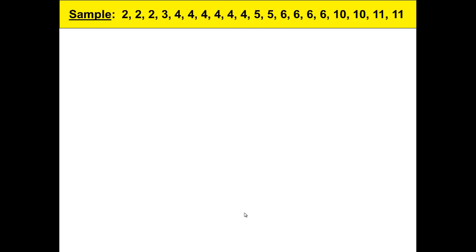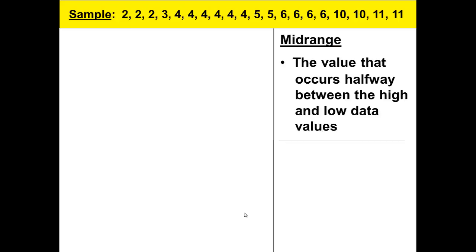Again, our data and a definition for midrange. The value that occurs halfway between the high and low data values. To find the midrange we take the high number, the low number, add them together, and divide by 2 to find halfway between the two numbers.